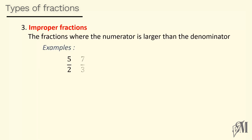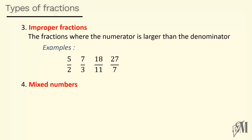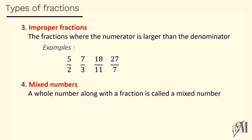The third type of fractions are improper fractions — it is the opposite of proper fractions. The fractions where the numerator is larger than the denominator are called improper fractions. Look here: 5 over 2. It is very clear that 5, which is the numerator, is greater than the denominator, so it belongs to improper fractions.